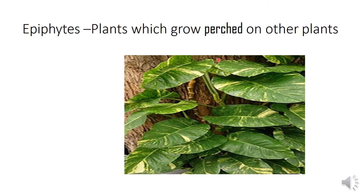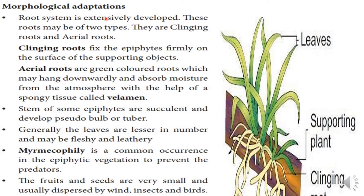Epiphytes are plants that live on another plant as their habitat. Morphological adaptation — root system: roots are extensively developed and of two types: clinging roots and aerial roots. Clinging roots fix the plant on the other plant. Aerial roots are green and hang freely in the atmosphere, absorbing moisture from the atmosphere.